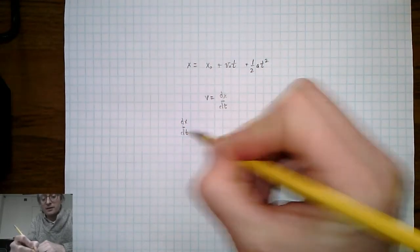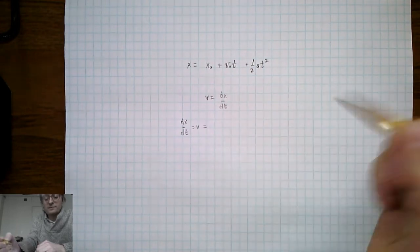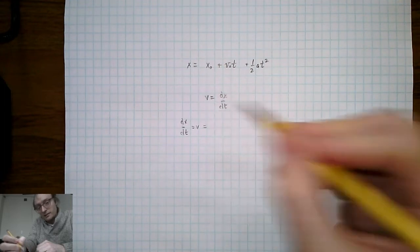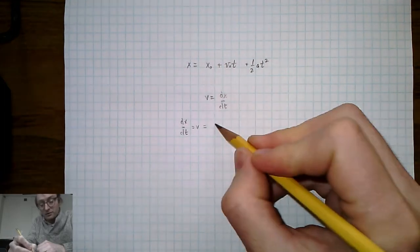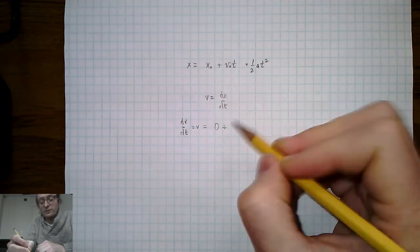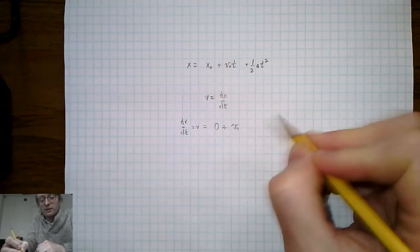Taking dx/dt equals velocity. The first term, since it's a constant, has a time derivative of zero. The second term, since it's linear in time, when we take the first derivative, only v0 remains.